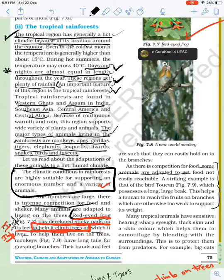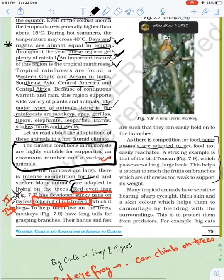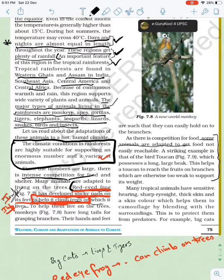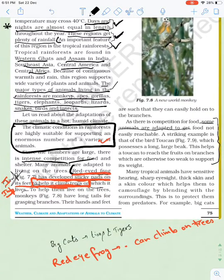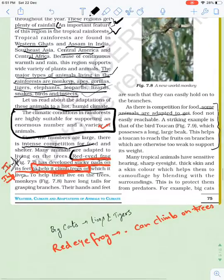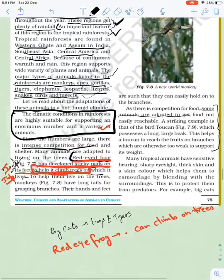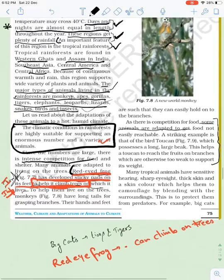Major types of animals found are monkeys, apes, gorillas, tigers, elephants, leopards, lizards, snakes, birds and insects. The climate conditions of these rainforests are suitable for a large number of organisms.